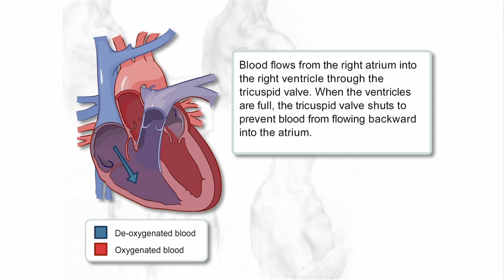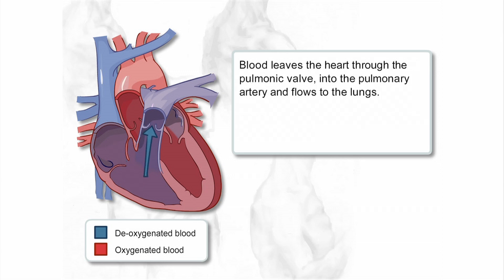When the ventricles are full, the tricuspid valve shuts to prevent blood flowing backward into the atrium. Blood leaves the heart through the pulmonic valve, into the pulmonary artery and flows to the lungs.